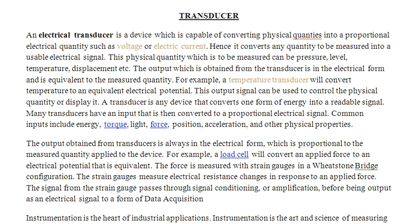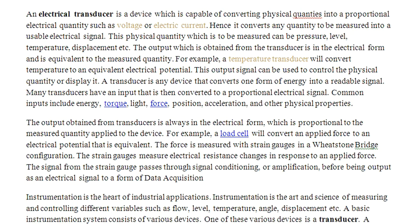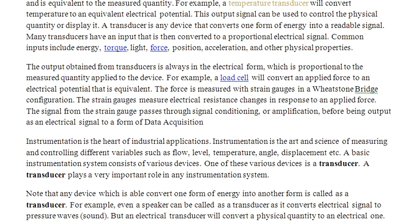A transducer is any device that converts one form of energy into a readable signal. Many transducers have an input that is converted to a proportional electrical signal. Common inputs include energy, torque, light, force, position, acceleration, or other physical properties. The output obtained from the transducer is always in electrical form, proportional to the measured quantity.